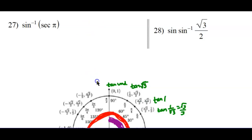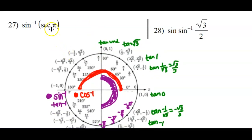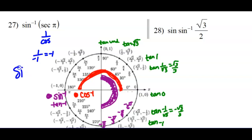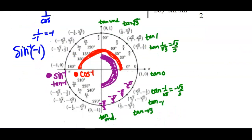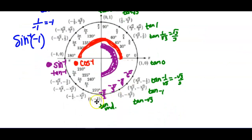Now we're back to using our unit circle. Remember, we work inside out. What is the secant at pi? At pi, we have this ordered pair. The secant is the reciprocal of cosine. The cosine at pi is negative 1, so 1 over negative 1 is just negative 1. Now to the outside: where's the sine of negative 1? The sine can't be over here — sine is the y value. We don't hit a sine of negative 1 until clear down here, and we can't call that 3 pi over 2. The sine is negative 1 at negative pi over 2.